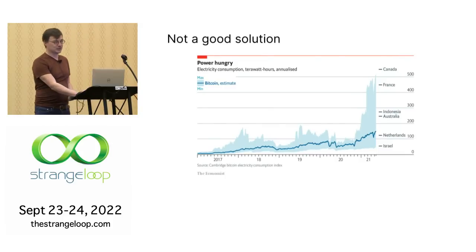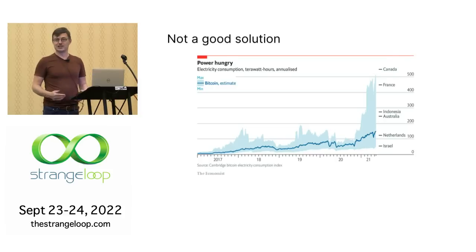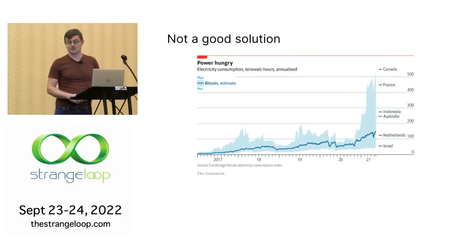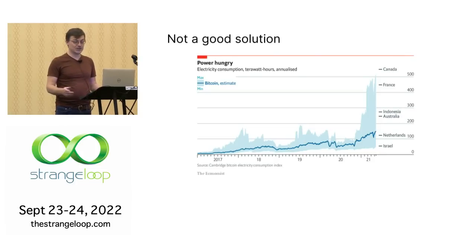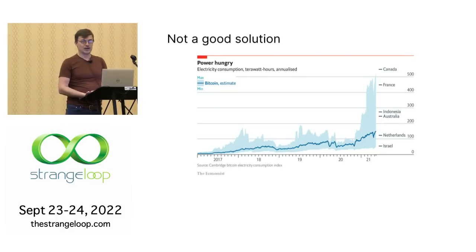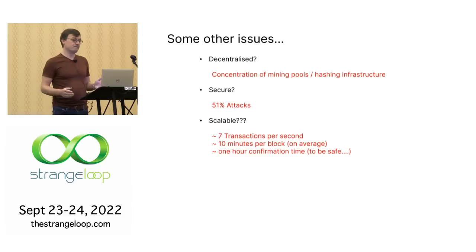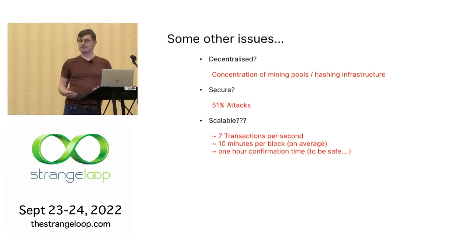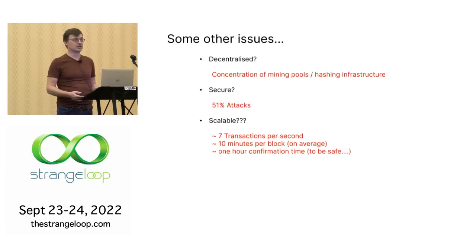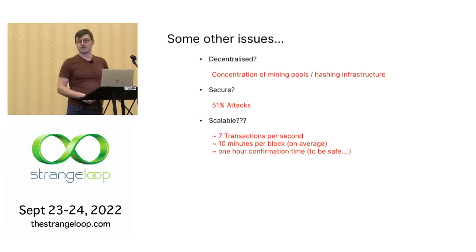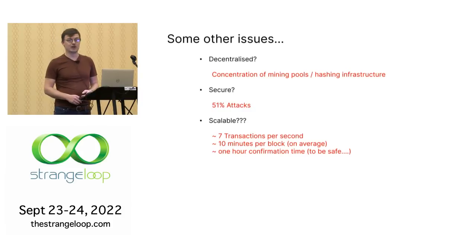But this is not a great solution. You're doing all of this hashing that isn't useful computation — just to win the right to create the next block. That creates incentives to spend a lot of energy and computing hardware, and Bitcoin is now using more electricity than many small countries. Is it really decentralized? Theoretically yes, but in practice the amount of hashing infrastructure needed makes it quite centralized among a few large mining pools. Is it secure? Theoretically yes, but if someone can temporarily get more than 51% of the hashing power, they can potentially rewrite the chain and execute a double spend attack.